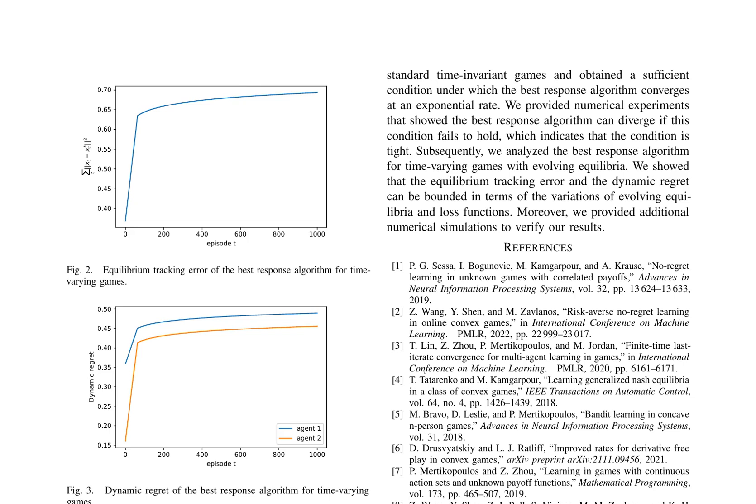In time-varying games with evolving equilibria, the best response algorithm is analyzed by defining the loss function for agent i as Ci(t,x) = αi(t)xi² + bi(t)xi(ai(t)+1), where αi and bi(t) are time-varying parameters. These parameters are chosen to satisfy the conditions m(t) ≥ l(t)√(n-1) for all t, and Vt = O(t^{3/4}), Wt = O(t^{3/4}), i = 1,2. The performance of the best response algorithm is evaluated through two key metrics: equilibrium tracking error and dynamic regret.